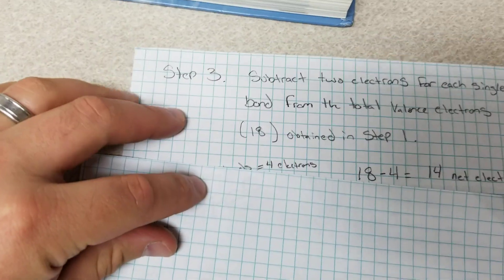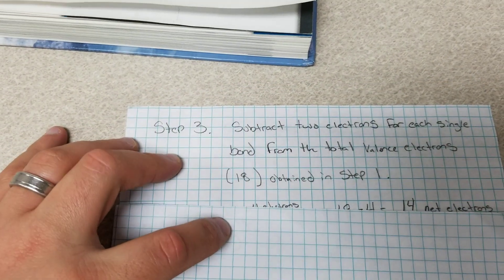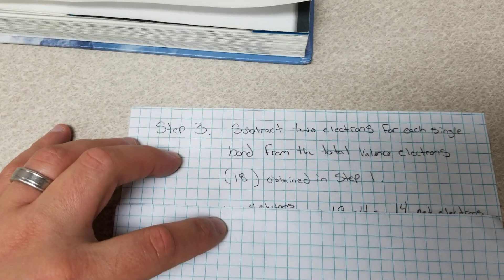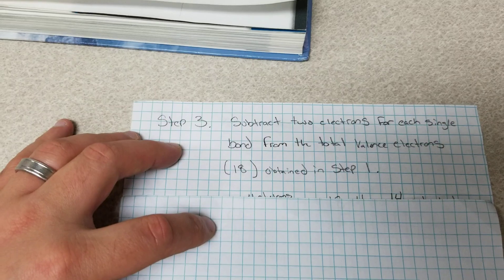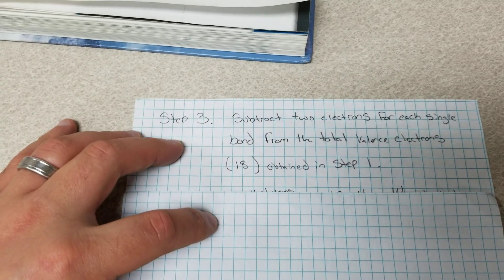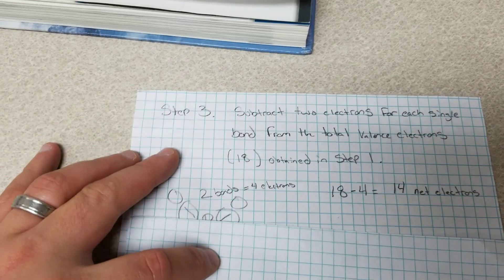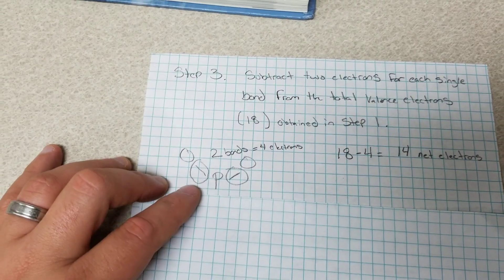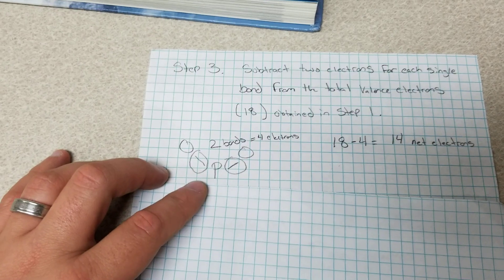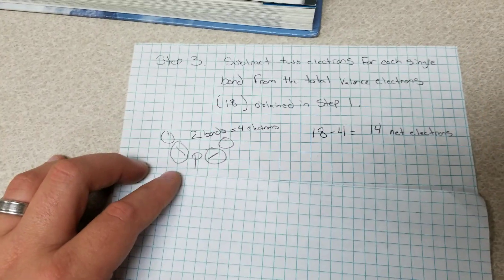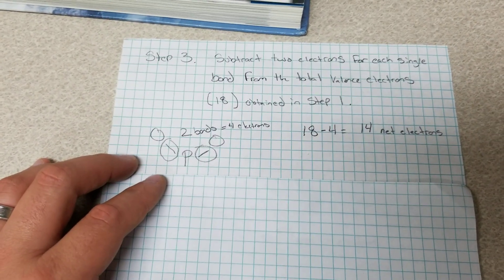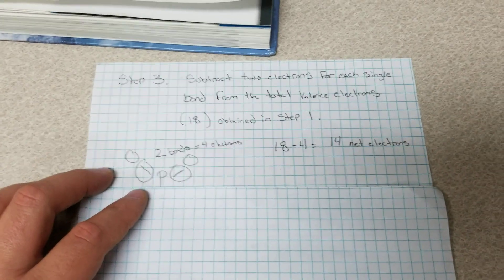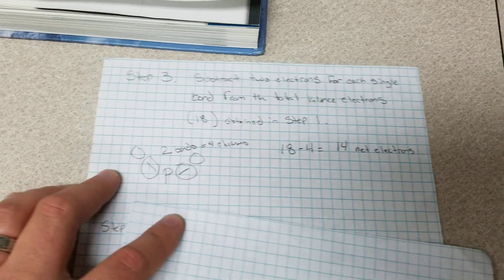Step three is we're going to subtract two electrons for each single bond from the total valence electrons which we have 18 obtained in step one. So we have two single bonds and in each single bond we have two electrons so it adds up to four electrons. We subtract the four electrons from our total of 18 and we end up with a net of 14 electrons.